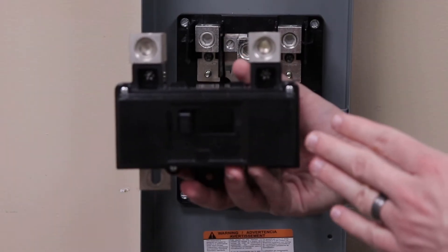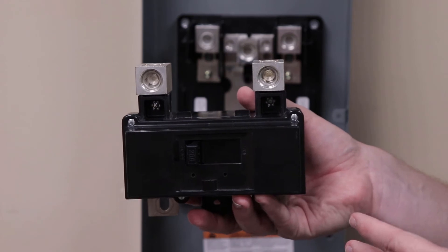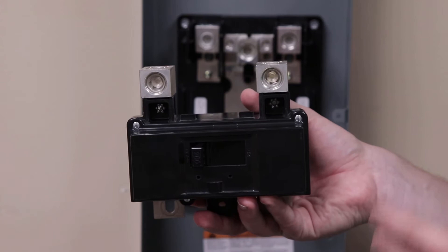The QOM 2 style breaker used in these enclosures is the same style breaker that is used as a main breaker in QO and Homeline high amperage main breaker load centers.